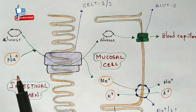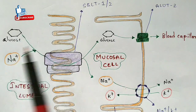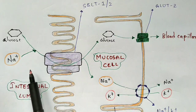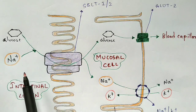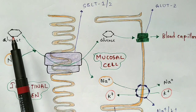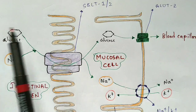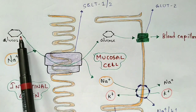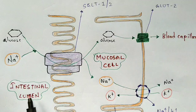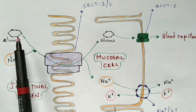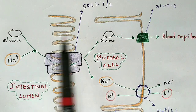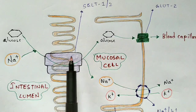In the diagram, the left area represents the intestinal lumen and the right area represents the mucosal cell. The polysaccharides have been converted into monosaccharides — glucose, galactose, and fructose. Glucose is present in the intestinal lumen, and its main aim is to enter into the blood. This is accomplished with the help of the protein carrier.